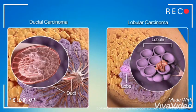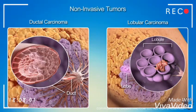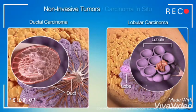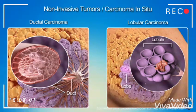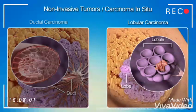When malignant cells form in ducts or lobules but have not invaded the surrounding tissue, the tumors are referred to as non-invasive tumors. These masses are also called carcinoma in situ, a name referring to a Latin phrase meaning 'in position.'